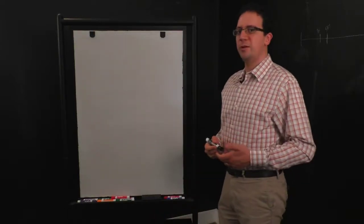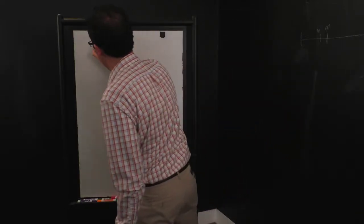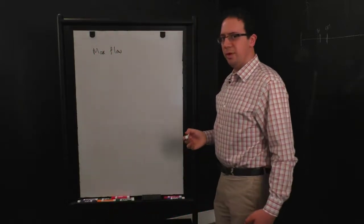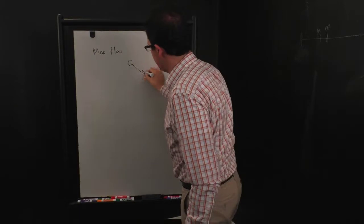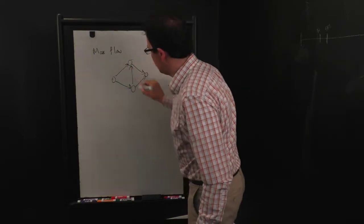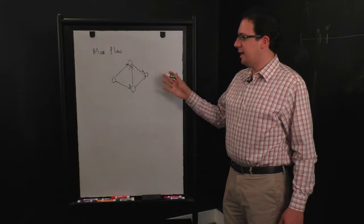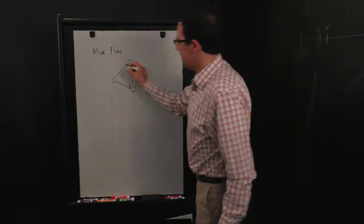The problem we're going to look at is called the maximum flow problem, or max flow. The input here will be a graph, something like this, with directed edges now, and on every edge there's a capacity.